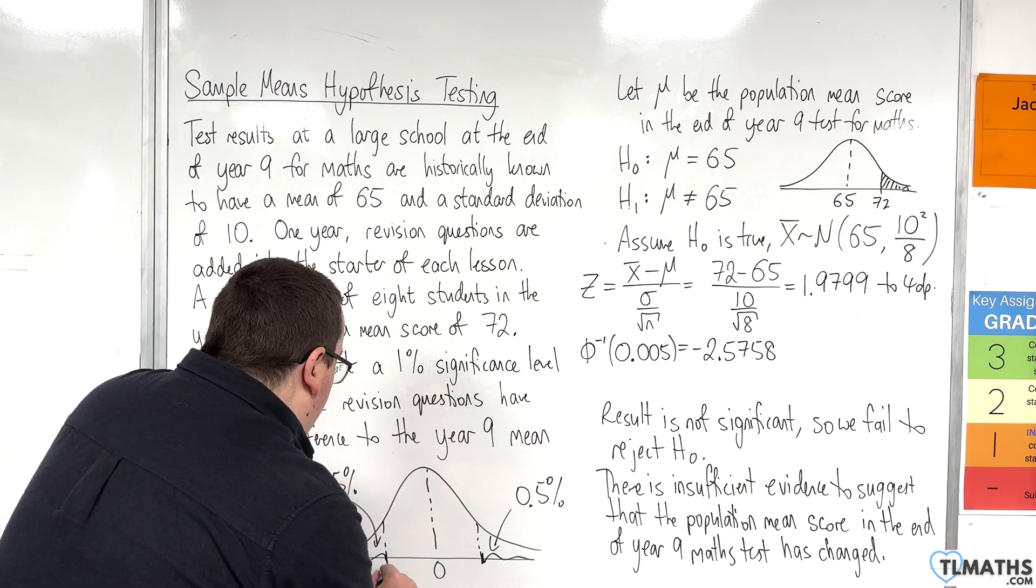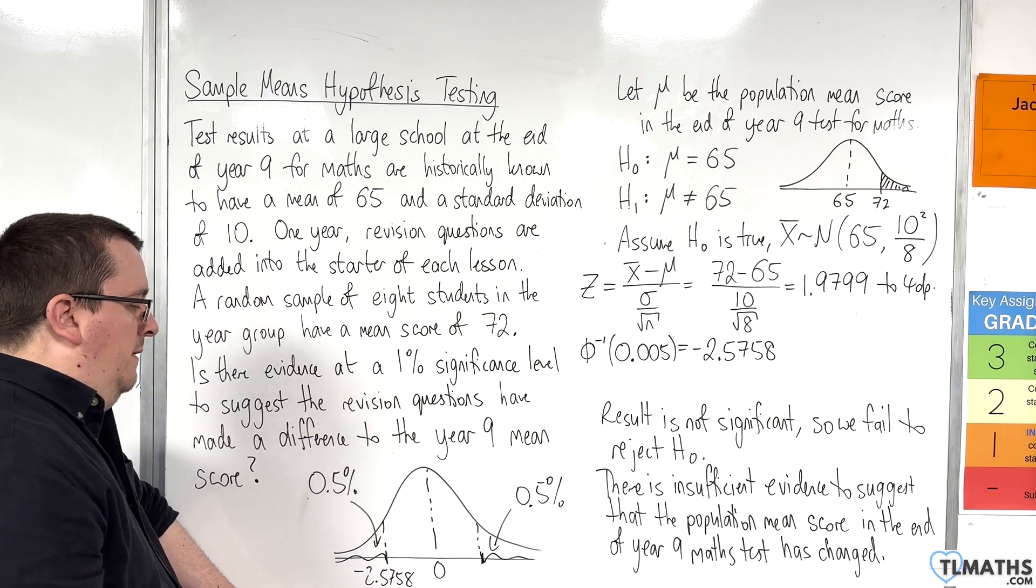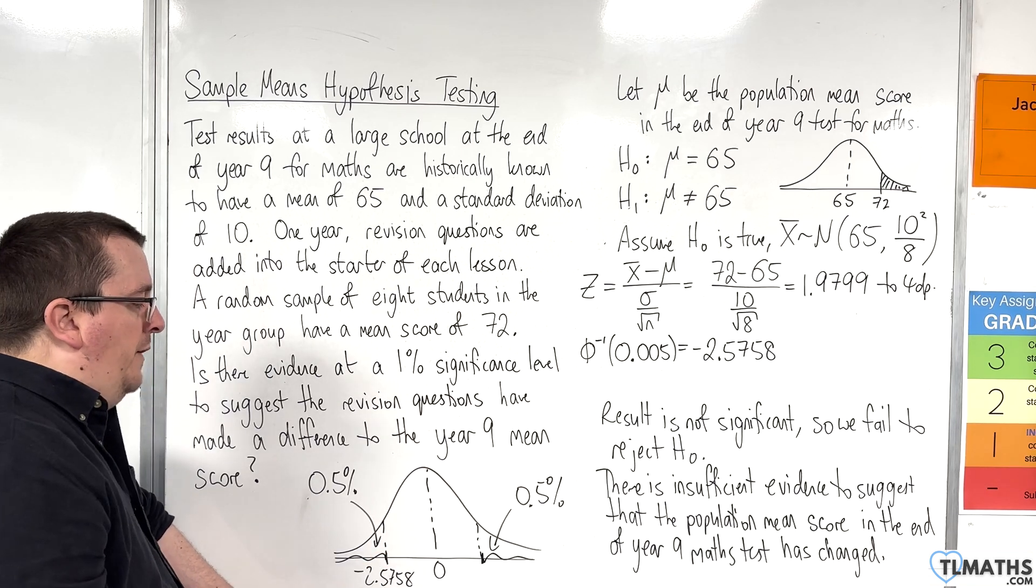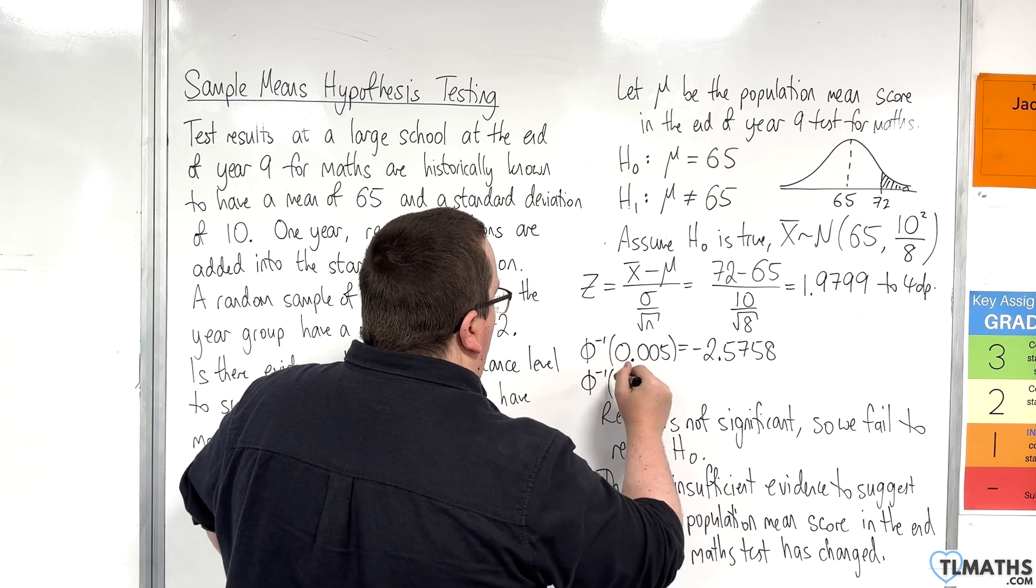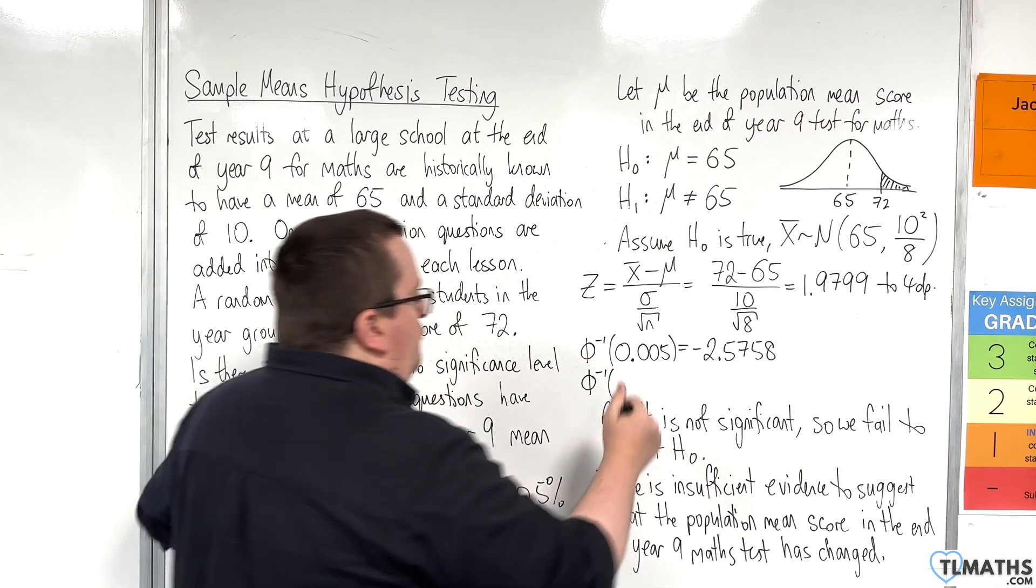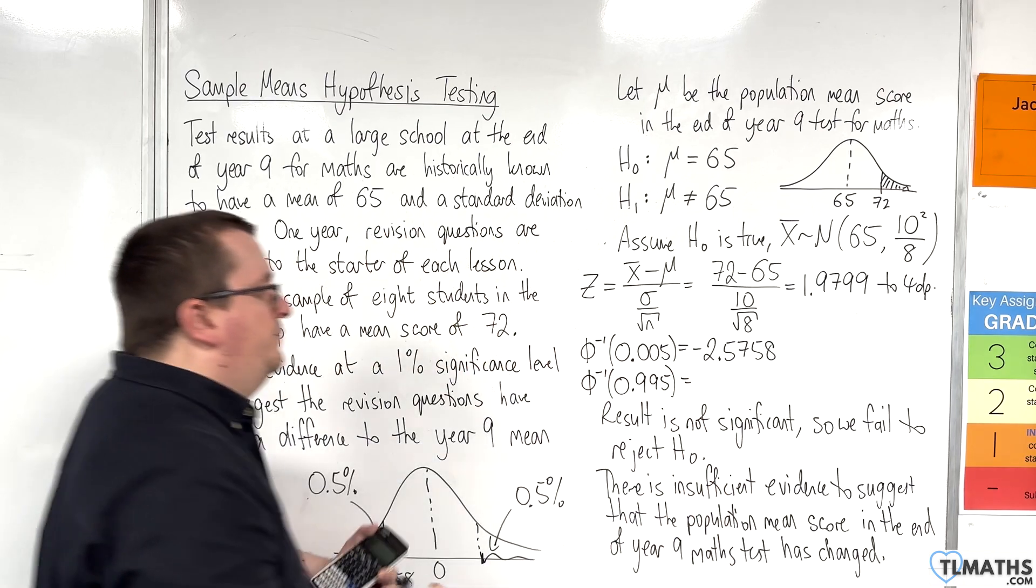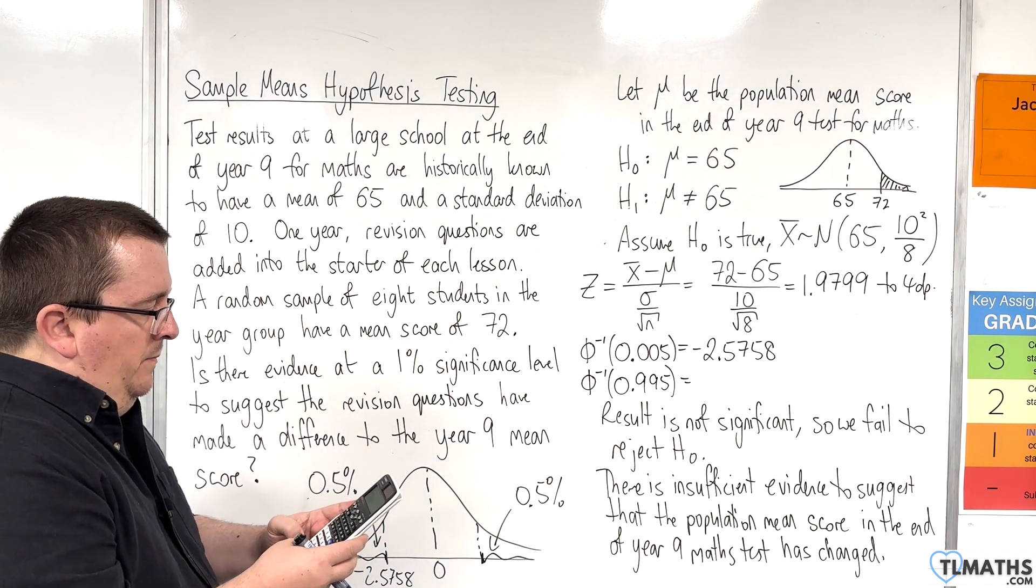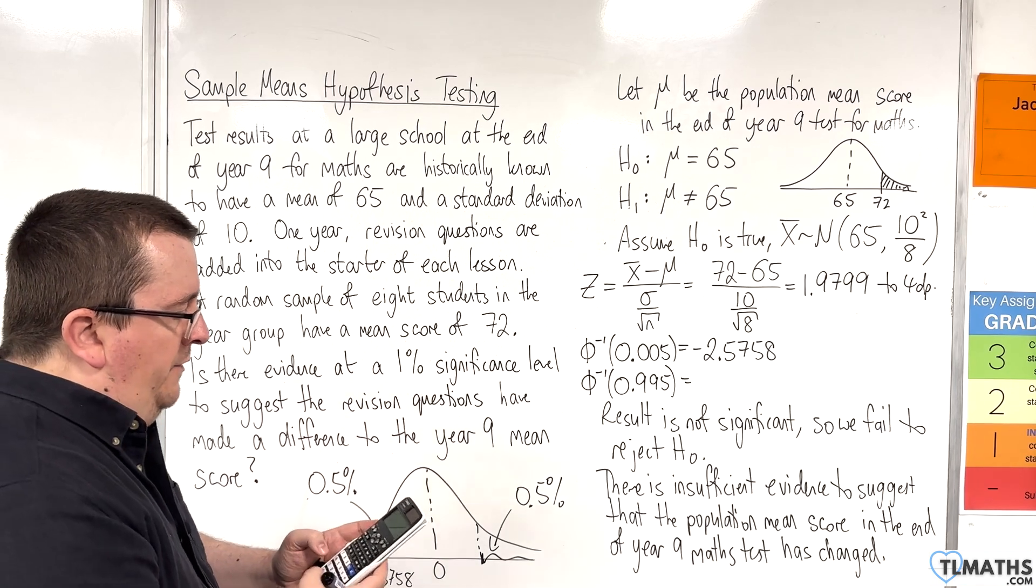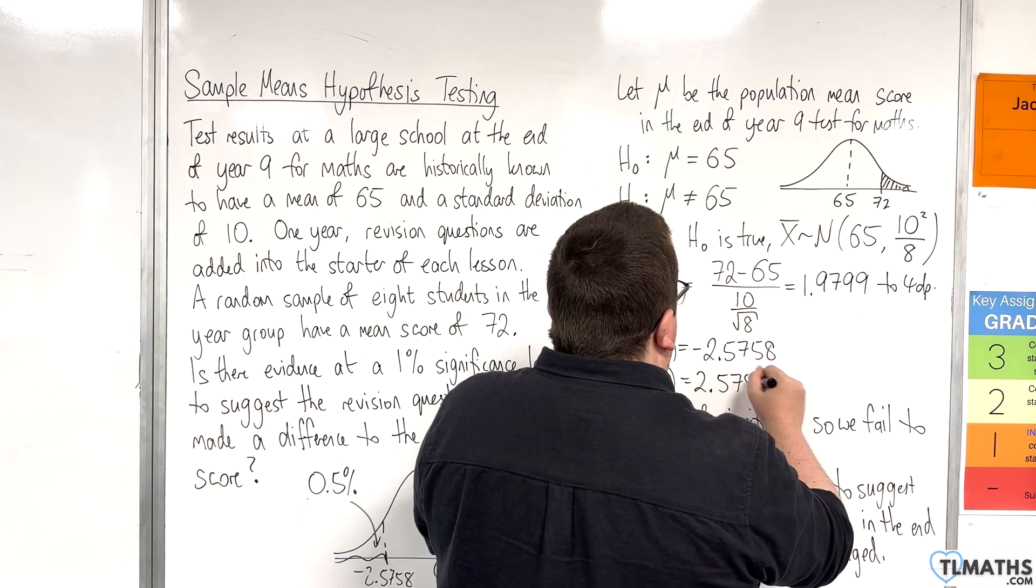Due to the symmetry of this curve, the other value should also be 2.5758. This would be getting the inverse normal, always looking to the left, remember, 0.995. If I do the same, putting the area as 0.995, unsurprisingly, we get 2.5758.